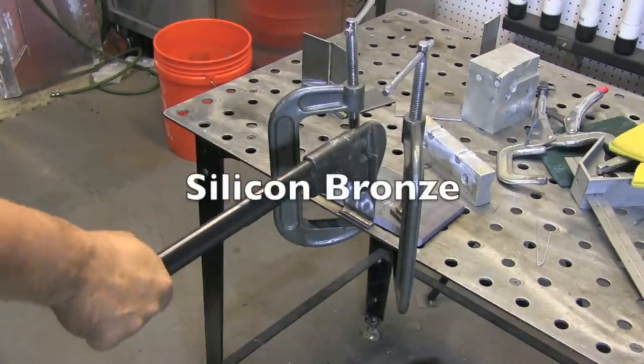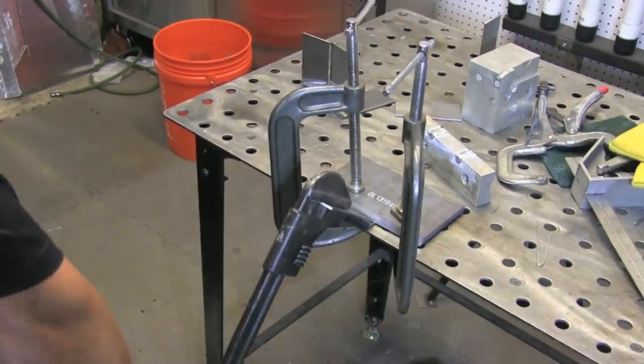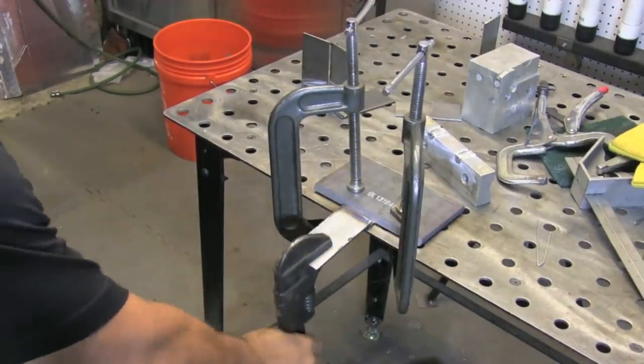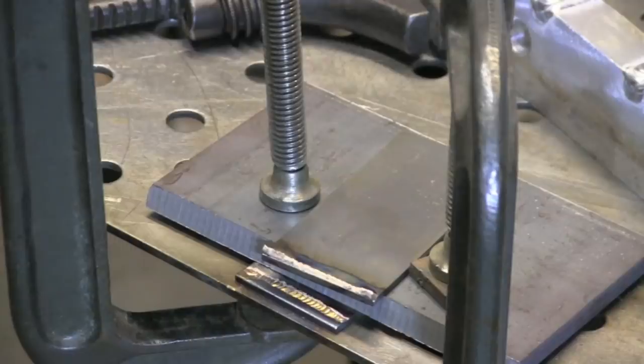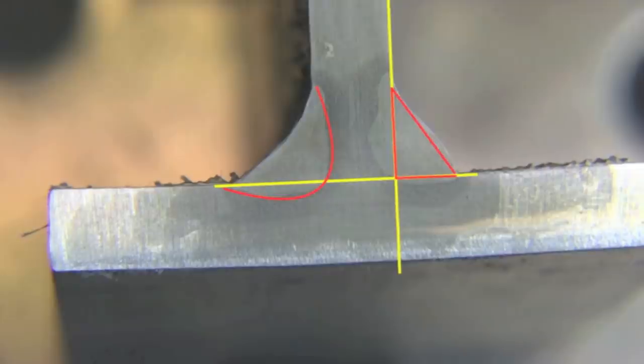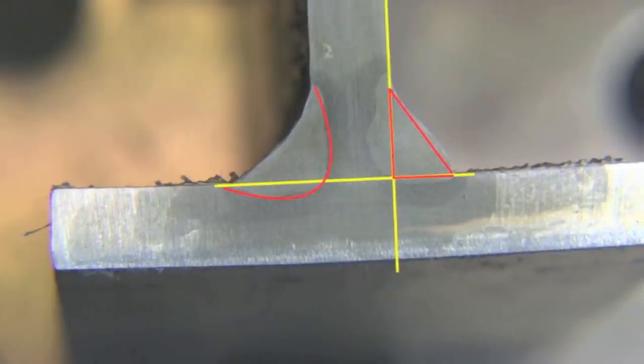We'll cool that off and then put it in the same situation. Very easy to snap. Even though I think the fillet is slightly larger than it was with the weld metal. But there's a pretty good reason for that. The silicon bronze, like I said, much weaker on tensile strength. But also,